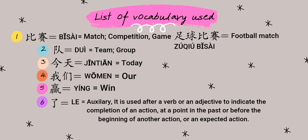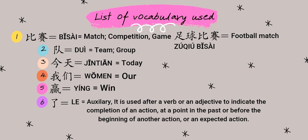比赛 (bǐsài) ka matlab hai match, competition ya game. 队 (duì) ka matlab hai team. 今天 (jīntiān) ka matlab hai aaj. 我们 (wǒmen) hum ya hamara ke liye use hota hai. 赢 (yíng) means jeetna. 了 (le) ek aisa word hai Chinese mein jo kisi kaam ke mukammal hone ki taraf ishara karta hai.